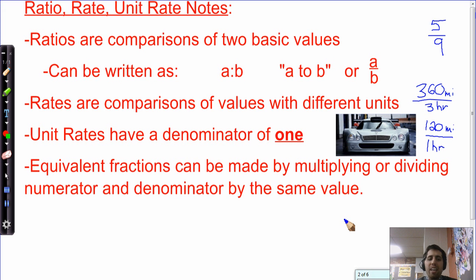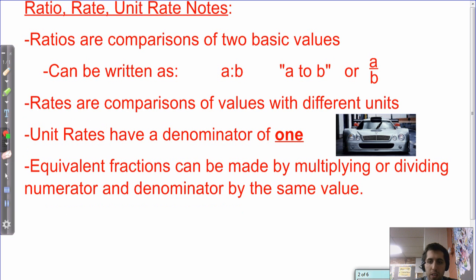Now, the last note we had to have is just a reminder. Equivalent fractions can be made by multiplying or dividing numerator and denominator by the same value, and equivalent fractions are equivalent. They're the same amount expressed in two different ways, so I want to show you that real quick, why we believe that and why that's true.